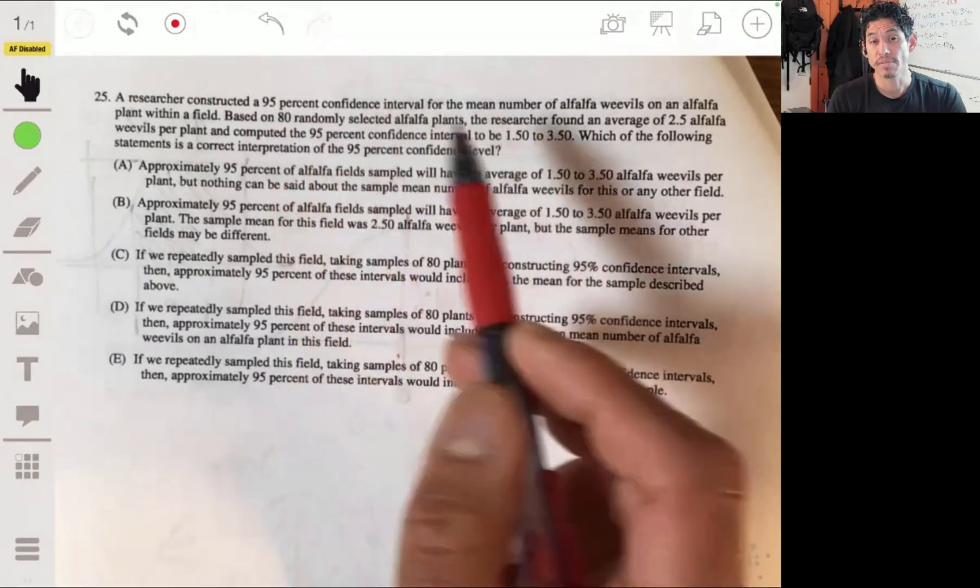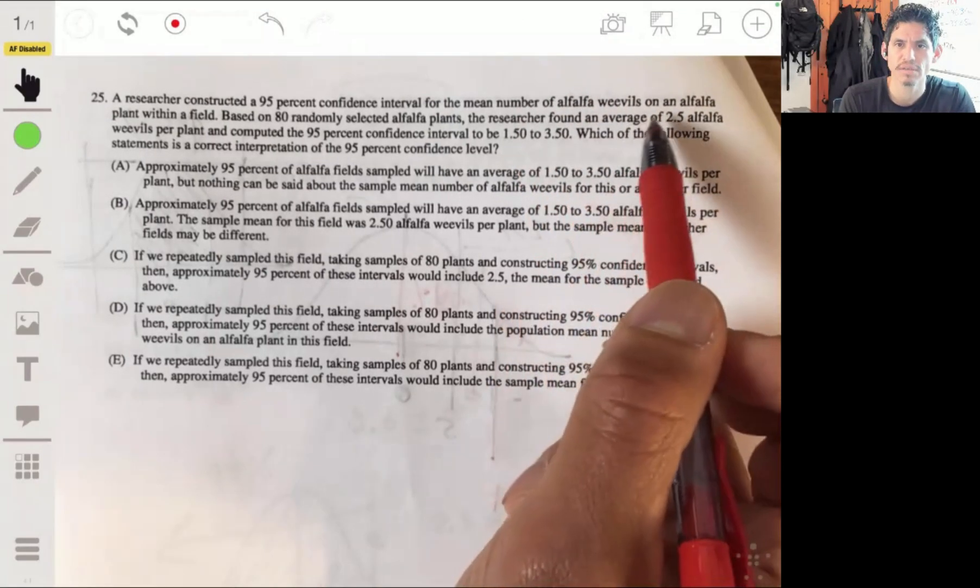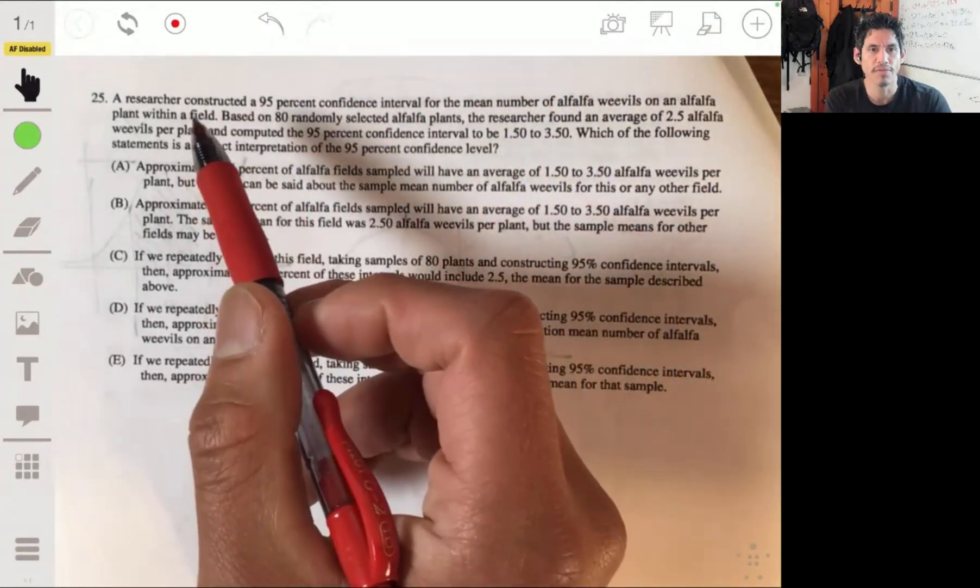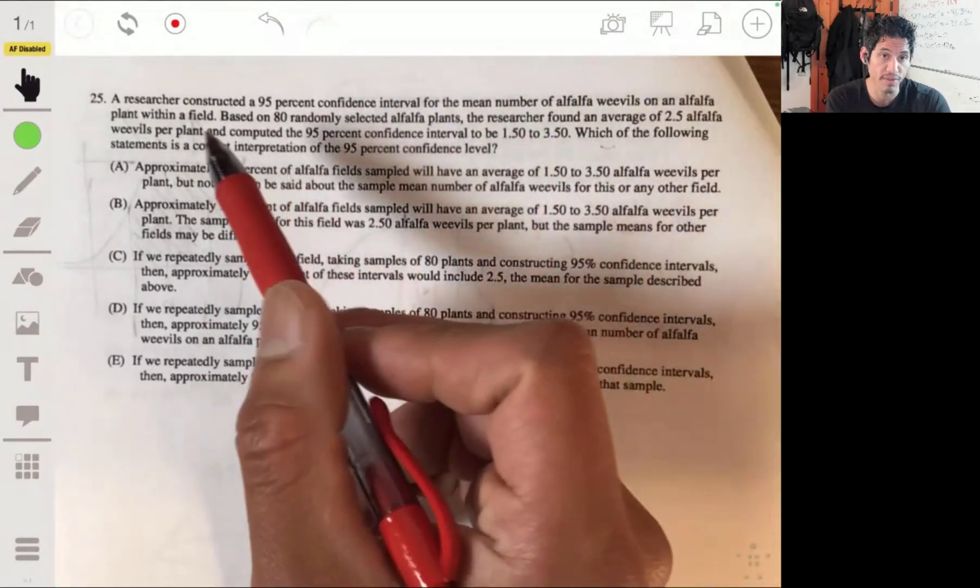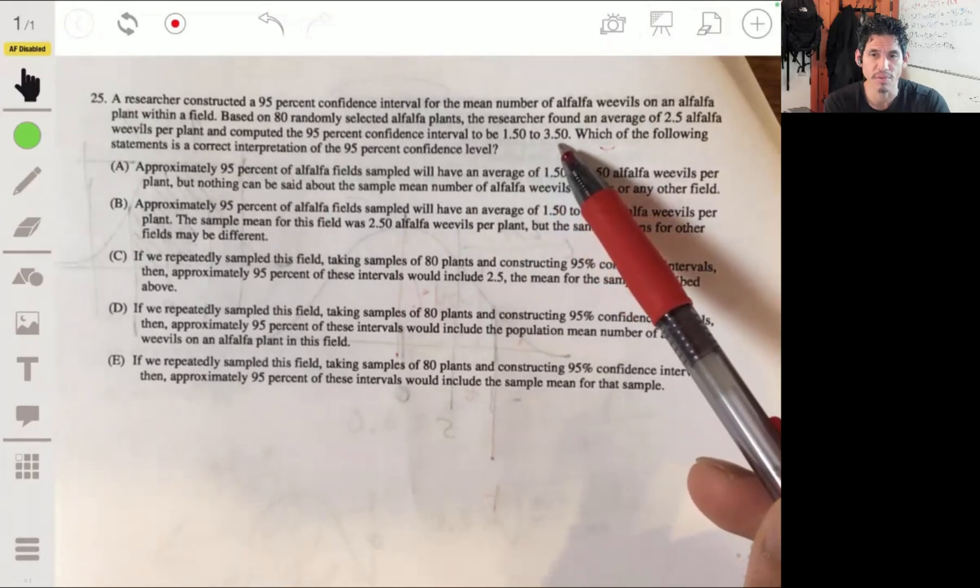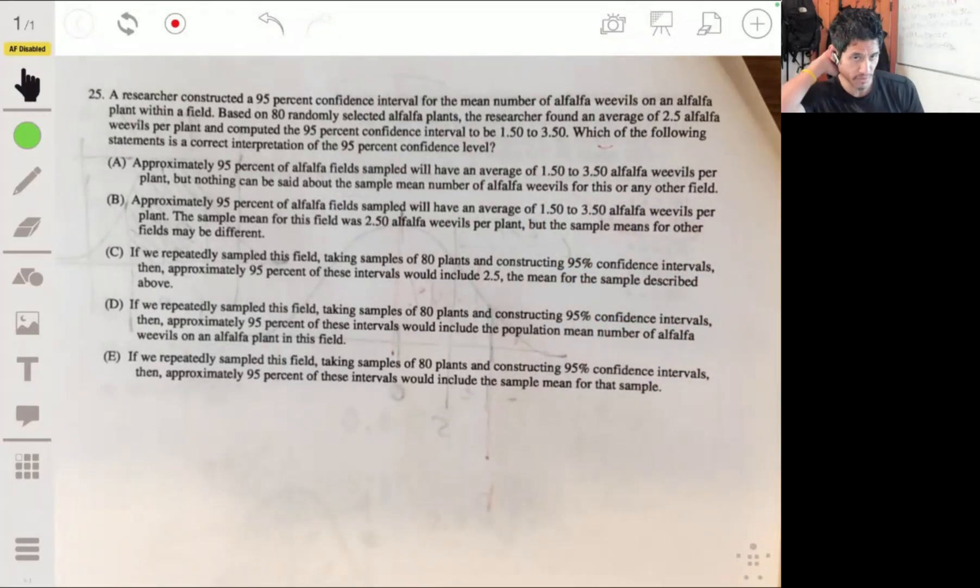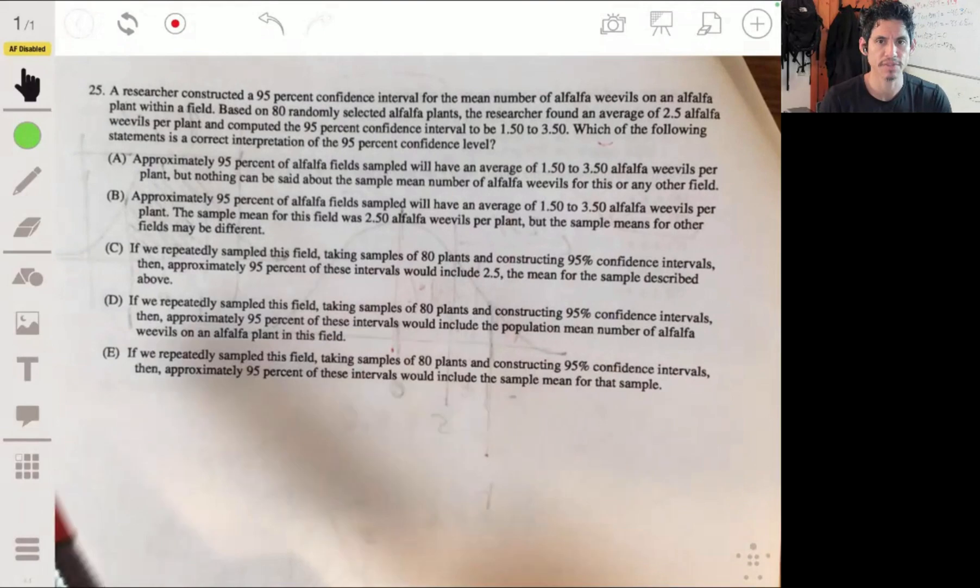The researcher constructed a 95% confidence interval for the mean number of alfalfa weevils on an alfalfa plant. Based on 80 randomly selected alfalfa plants, the researcher found an average of 2.5 alfalfa weevils per plant and computed the 95% confidence interval to be 1.5 to 3.5. Which of the following is the correct interpretation of the 95% confidence interval? Oh well, all that alfalfa stuff is just to confuse us. We just really have to know what confidence intervals mean. When you really understand them conceptually, you'll know which of these will be correct.